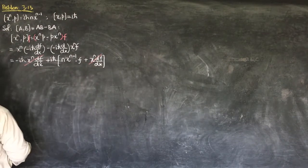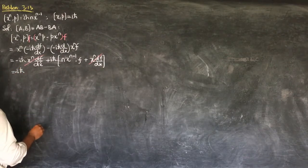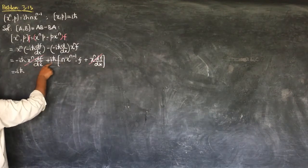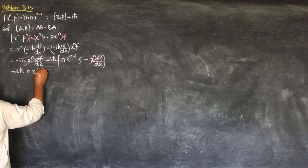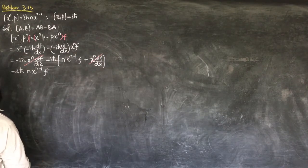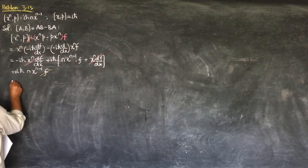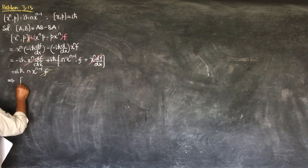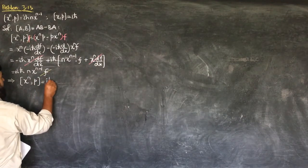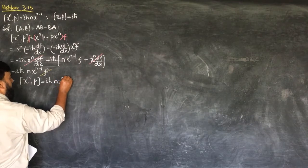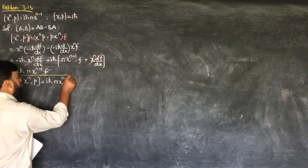Now the x^n·(df/dx) term cancels with −iℏ·x^n·(df/dx), so we are left with iℏ·n·x^(n-1)·f. Removing f from both sides, this implies [x^n, p] = iℏ·n·x^(n-1), and hence this is the proof of problem 3.13.